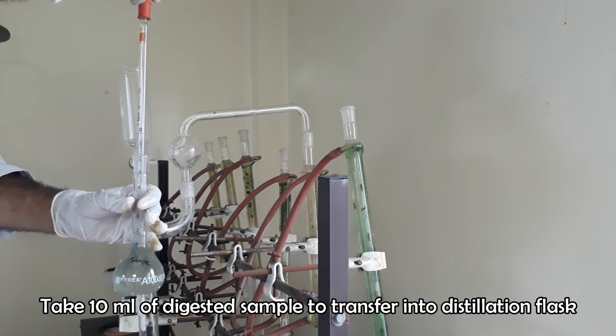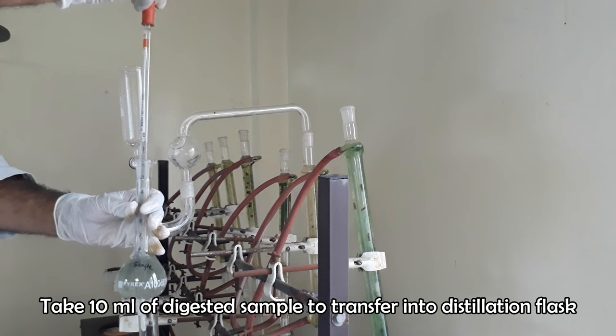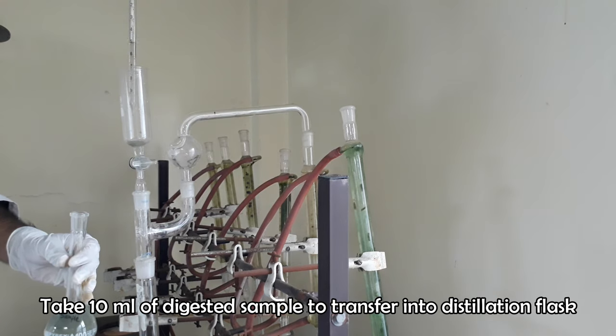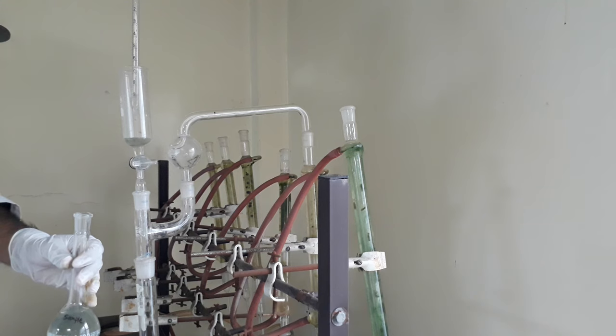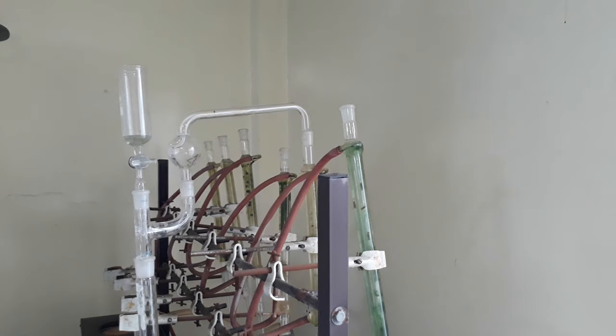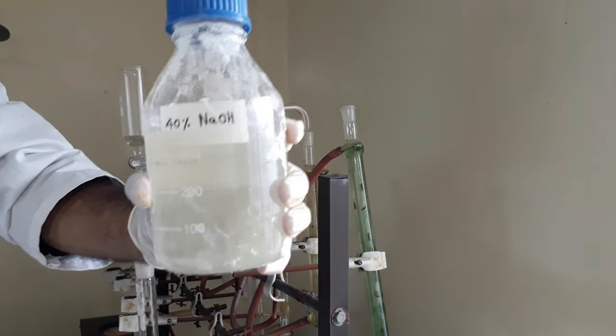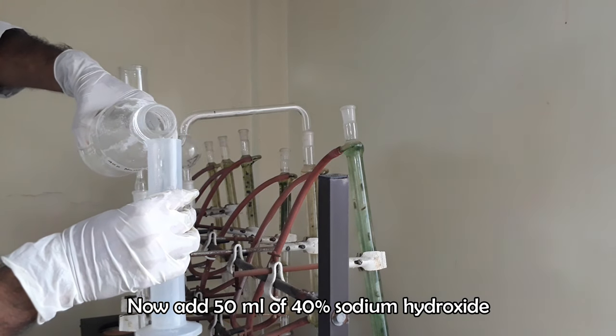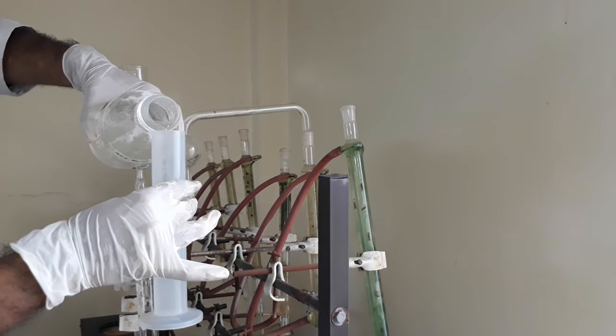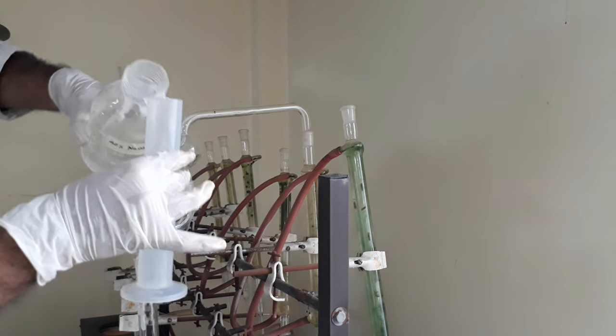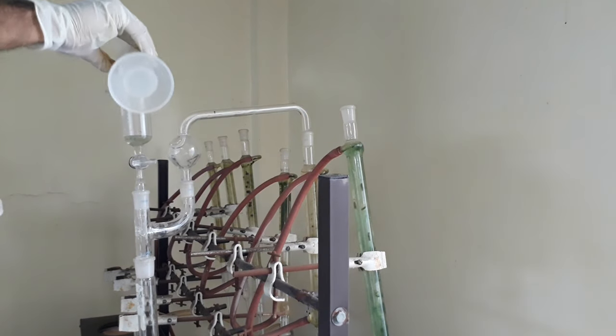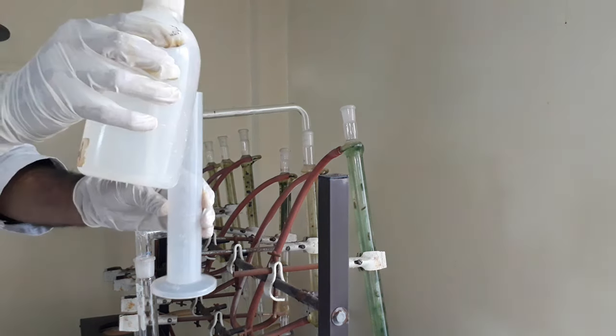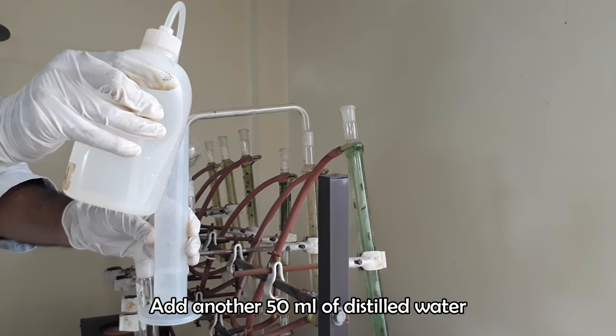Add 10 ml of diluted digestive juice to the distillation flask. Now add 50 ml of 40% sodium hydroxide. Finally, add 50 ml of distilled water to the distillation flask.